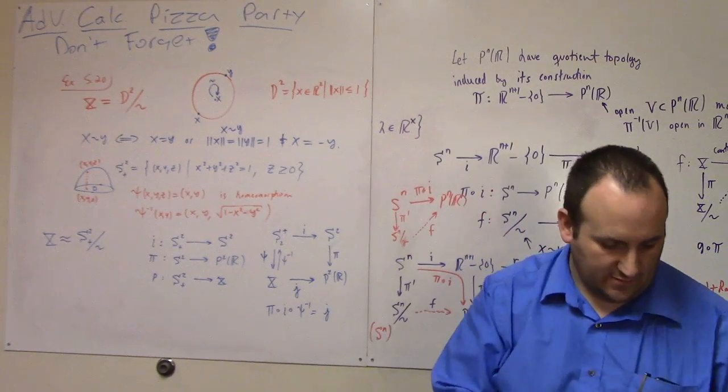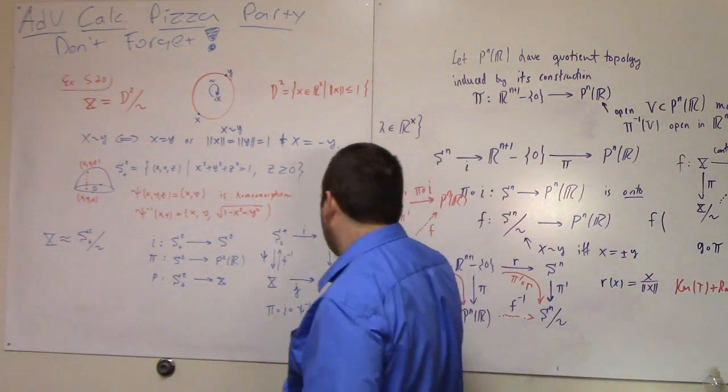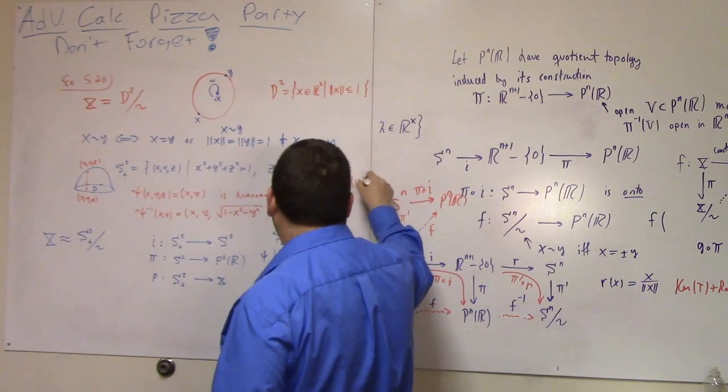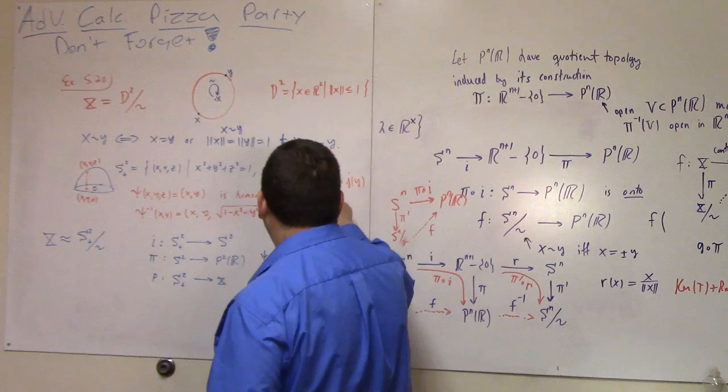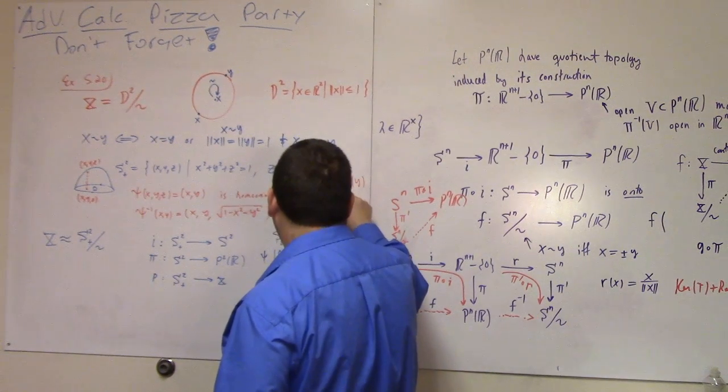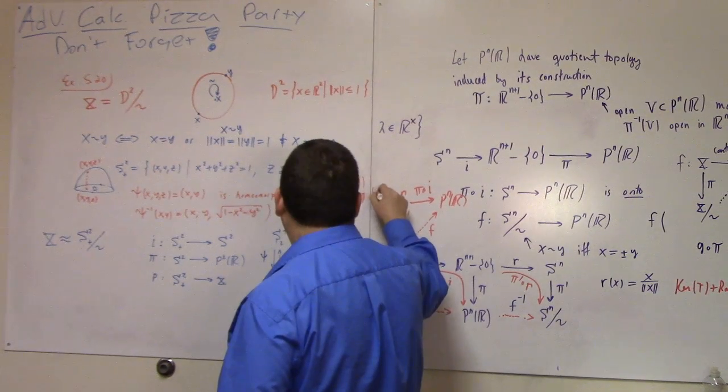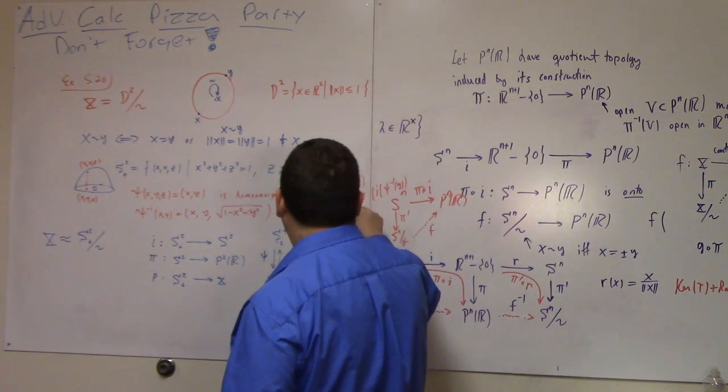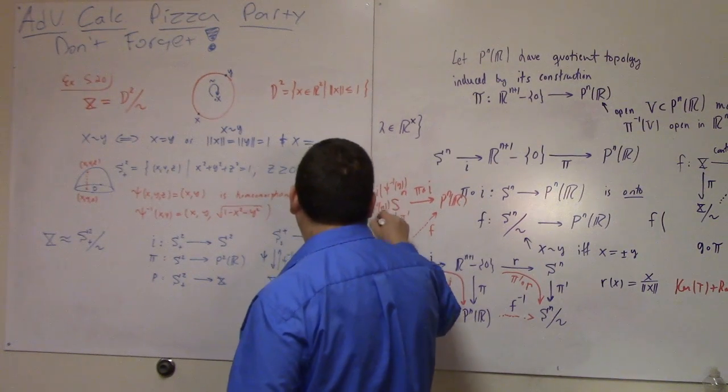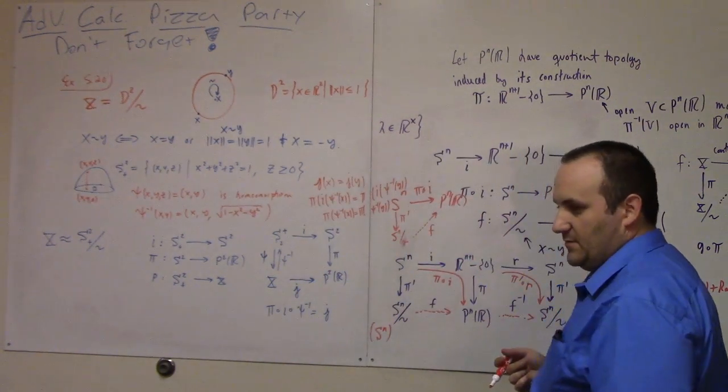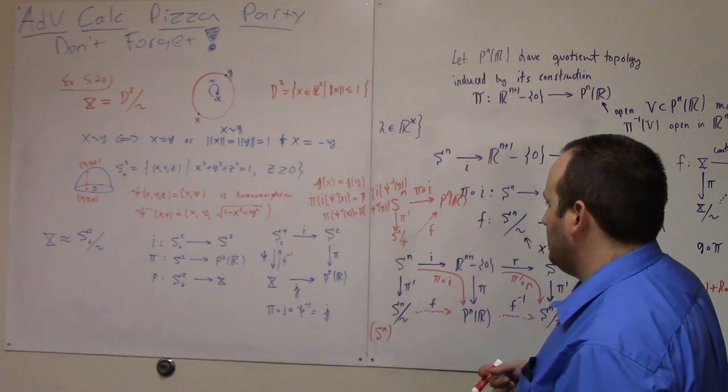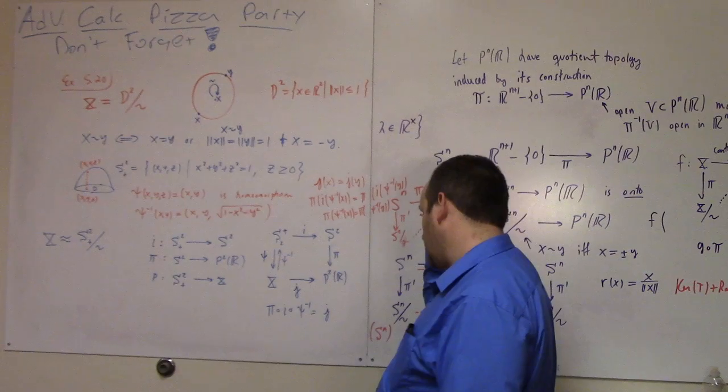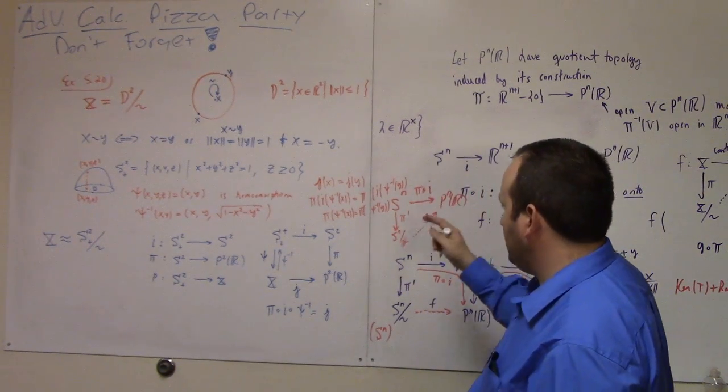So why is it that this is bijective? I think maybe given in one simple way, we should just check, think about images. Like if you have J of X equal to J of Y, what would that mean? That would mean pi of I of psi inverse of X is equal to pi of I of psi inverse of Y.